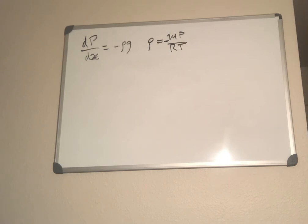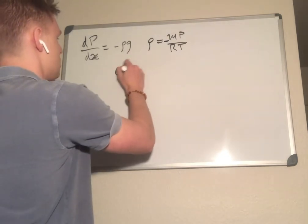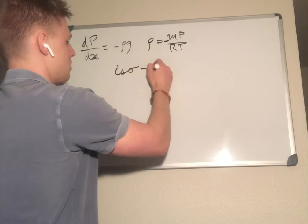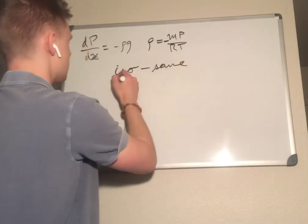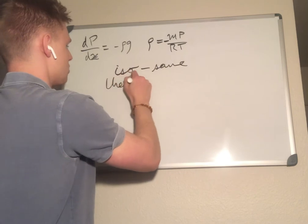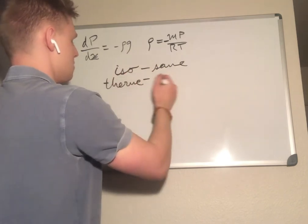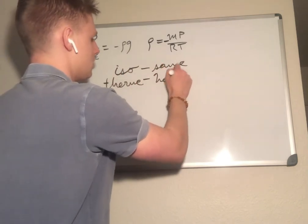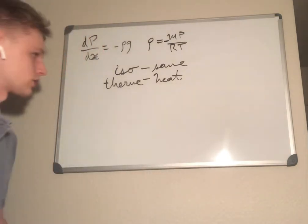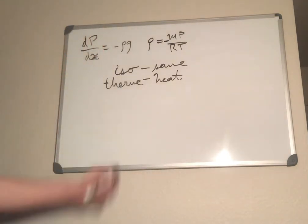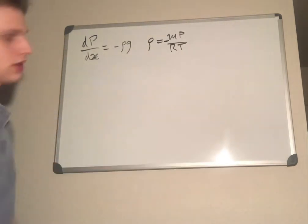Modeling the atmosphere as an isothermal column - isothermal meaning same temperature - of ideal gas. The isothermal column has the same temperature throughout.